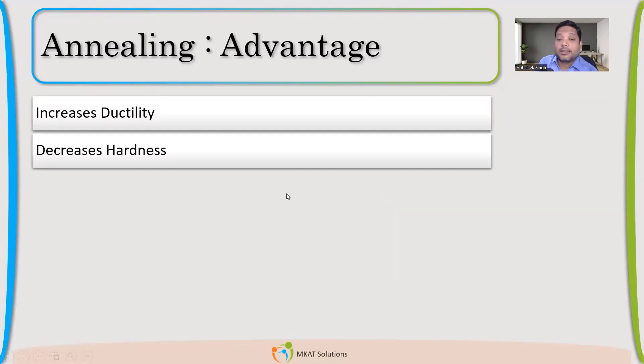So ductility will improve. Hardness will become uniform and the surface, whatever hardness if you have accumulated, it will become low. It will decrease that hardness of that surface. So that is one added advantage.